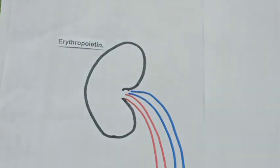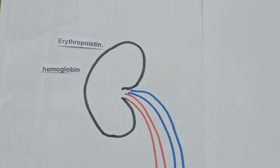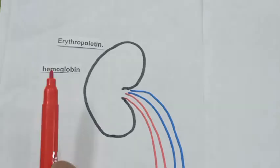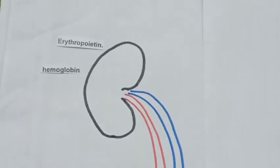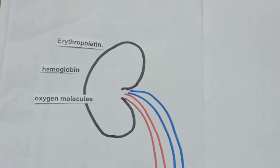As we know very well, red blood cells contain hemoglobin which carries oxygen. The function of hemoglobin is to carry oxygen molecules, so oxygen molecules are transported by the hemoglobin molecule. One hemoglobin molecule contains four oxygen molecules.